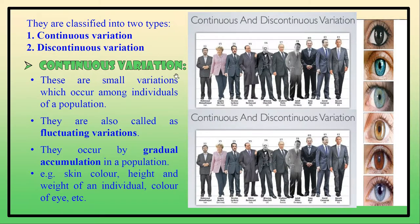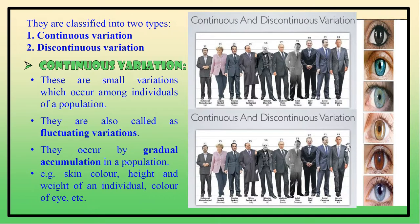Germinal variations are classified into two types: continuous variation and discontinuous variation. Continuous variations are very small variations which occur among individuals of a population. They are also called fluctuating variations, meaning the expression of the phenotype fluctuates — increasing or decreasing. They occur by gradual accumulation in a population. Examples include skin color, height, weight, and eye color.